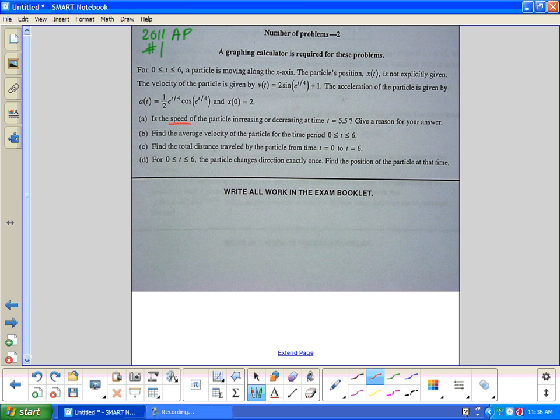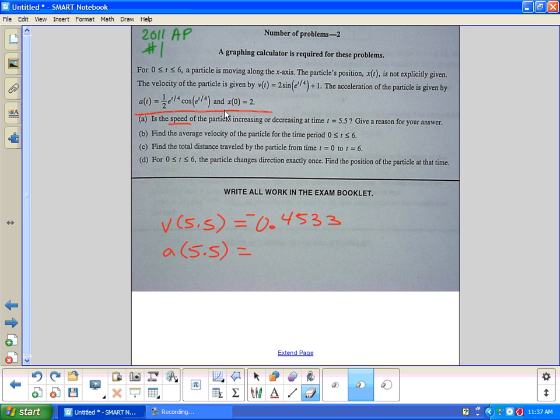So what I have to do is just check v(5.5). I plug that into this equation, put in 5.5, and we should get that the velocity was negative 0.4533. And then if I check a(5.5) into this equation, which is just a lot of plug and chug, I get that it was negative 1.3585.